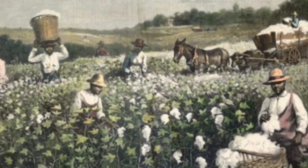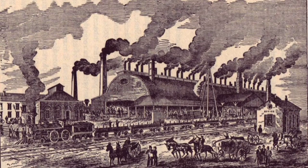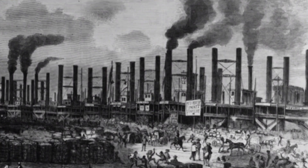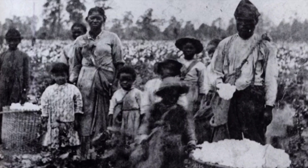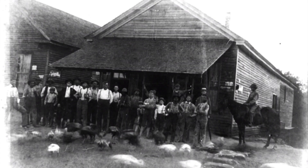Before the Civil War, Northern and Southern development followed increasingly different paths. By 1860, the North contained 50% more people than the South. It was more urbanized and attracted more European immigrants. The Northern economy was more diversified into agricultural, commercial, manufacturing, financial, and transportation sectors. In contrast, the South had smaller and fewer cities, and a third of its population lived in slavery.